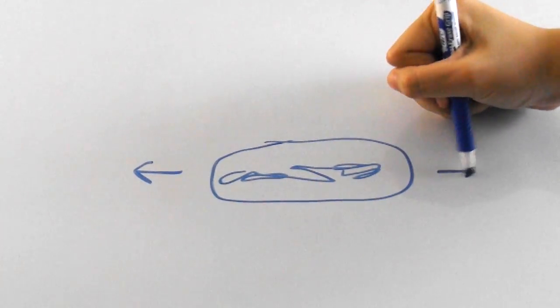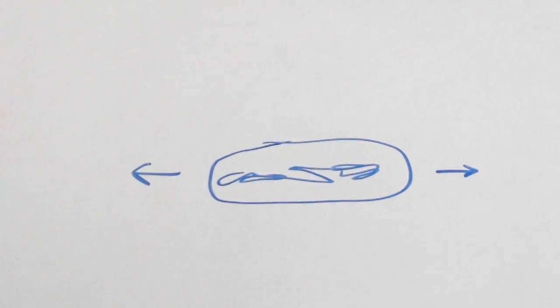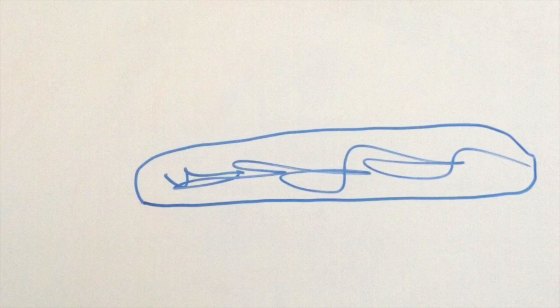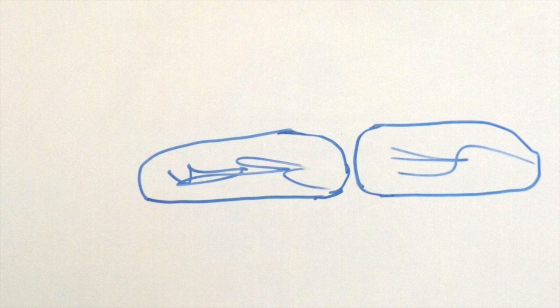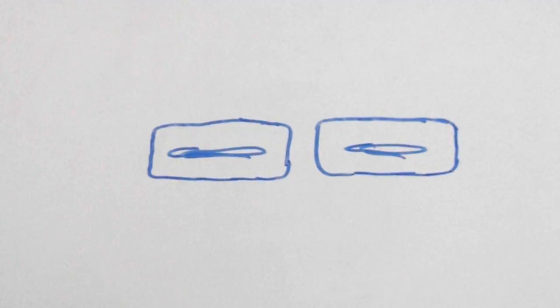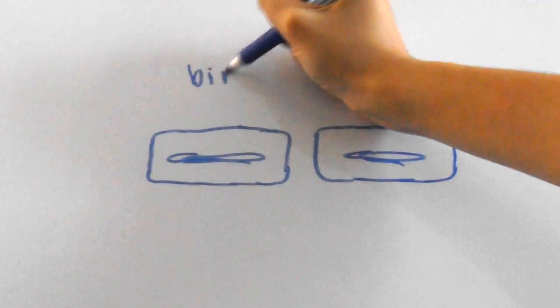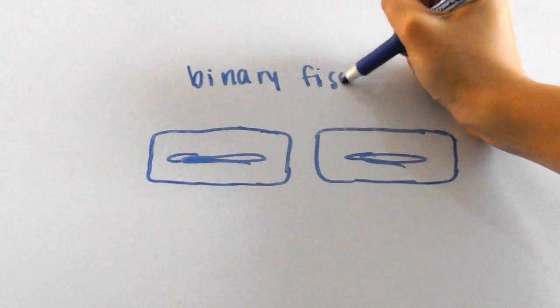The parent cell begins the process by getting longer and replicating its DNA. Soon after, the cell starts to divide when it's ready, while the cell membrane envelopes around the new genetic material. When it's all said and done, the cells separate.